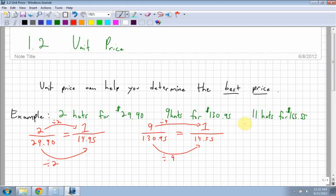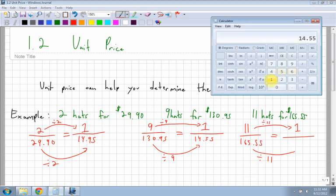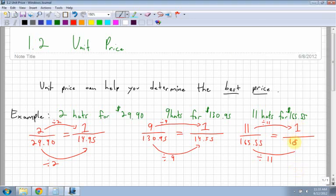Lastly, I have 11 hats for $165.55. Again, I have to figure out what it is per 1 hat. So from 11 to 1, I divide by 11. So the bottom of the fraction will also be divided by 11. So I have $165.55 divided by 11 is equal to $15.05.